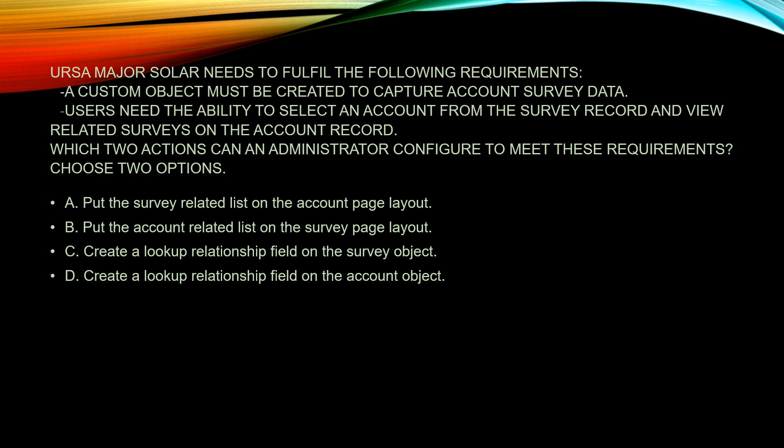For the first requirement — capturing survey data and displaying it on the account — putting the survey related list on the account page layout is how we'd do that, so I'm going with A. For the second requirement — users need the ability to select an account from the survey record — right there it's saying it needs to be on the survey object. So it's going to be C: create a lookup relationship field on the survey object. The answers are A and C.